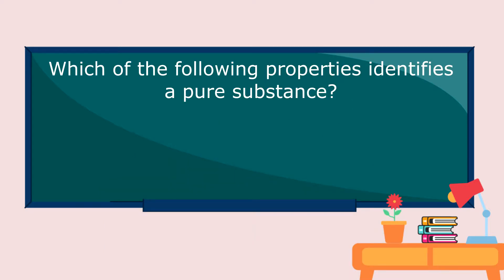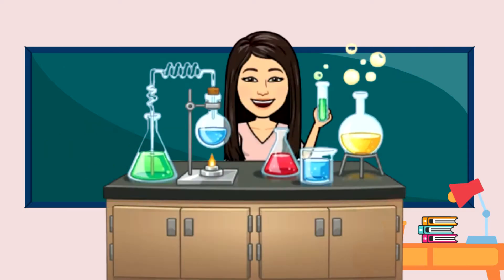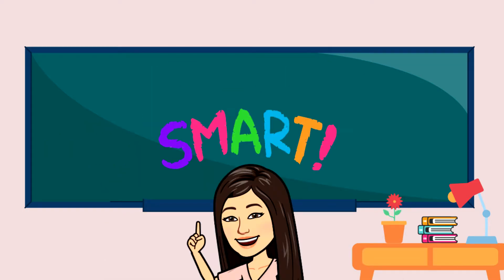Which of the following properties identifies a pure substance? A. Soluble in water? B. Has a constant boiling temperature? C. Can undergo several phase changes? If your answer is letter B, very good.